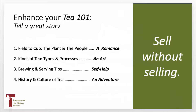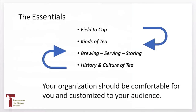I encourage you to enhance your Tea 101 story like you're telling a story, and use some of the techniques that performers, storytellers, and writers use to make their work more interesting. For instance, a field-to-cup part of your presentation can be about the plant and the people — you can treat it like a romance novel. Kinds of teas and the processes are like discussing an art or a craft. Brewing and serving techniques are self-help. The history and culture of tea is a great adventure. But don't use my organization as rules — your organization should be comfortable for you and customized for your audience in any order that gives you a feeling of flow.